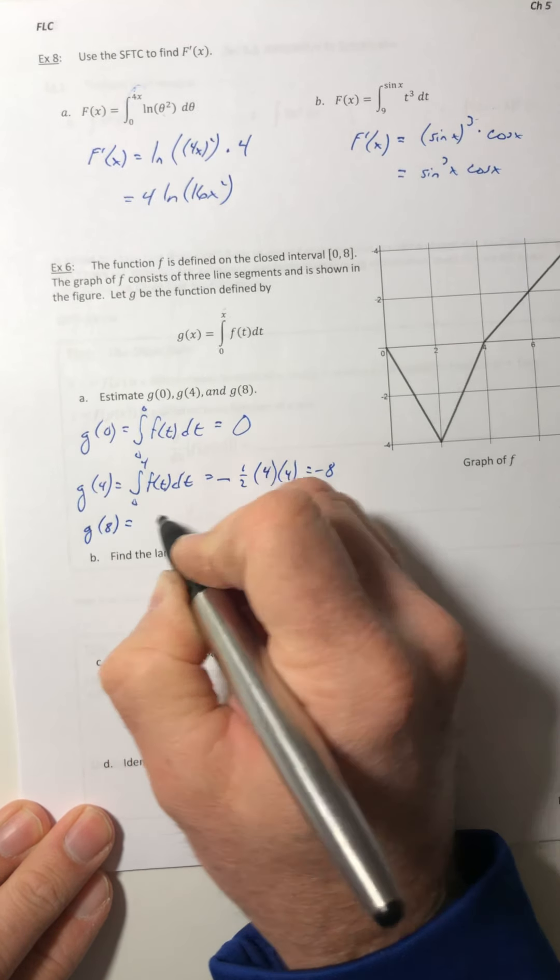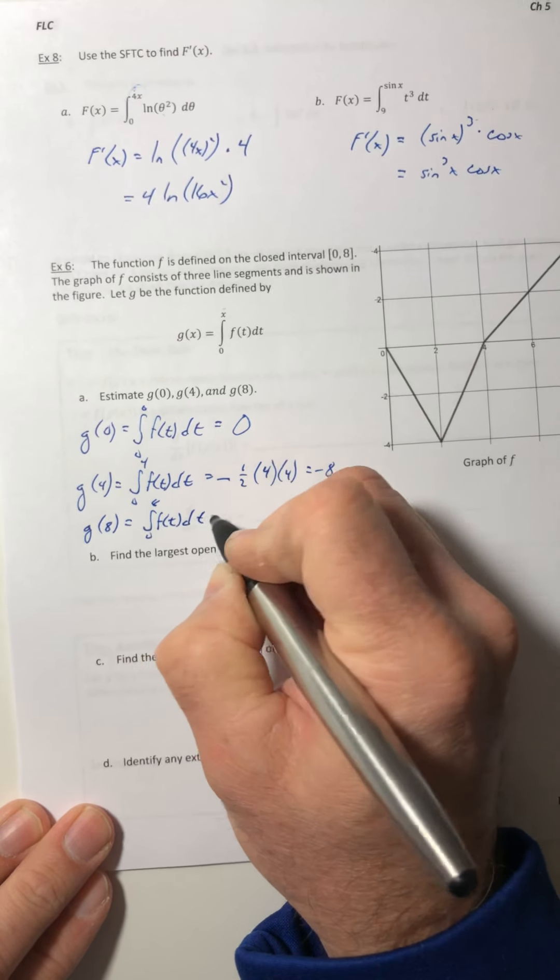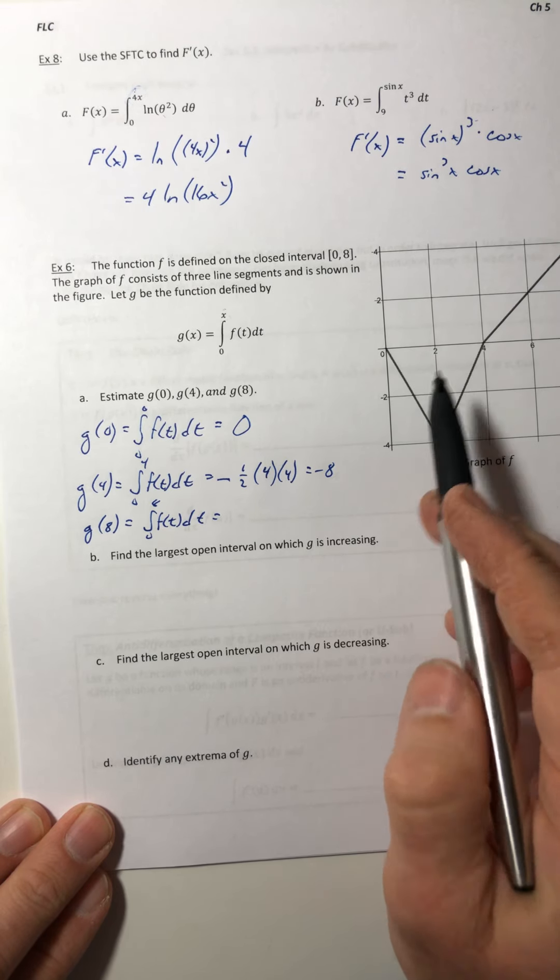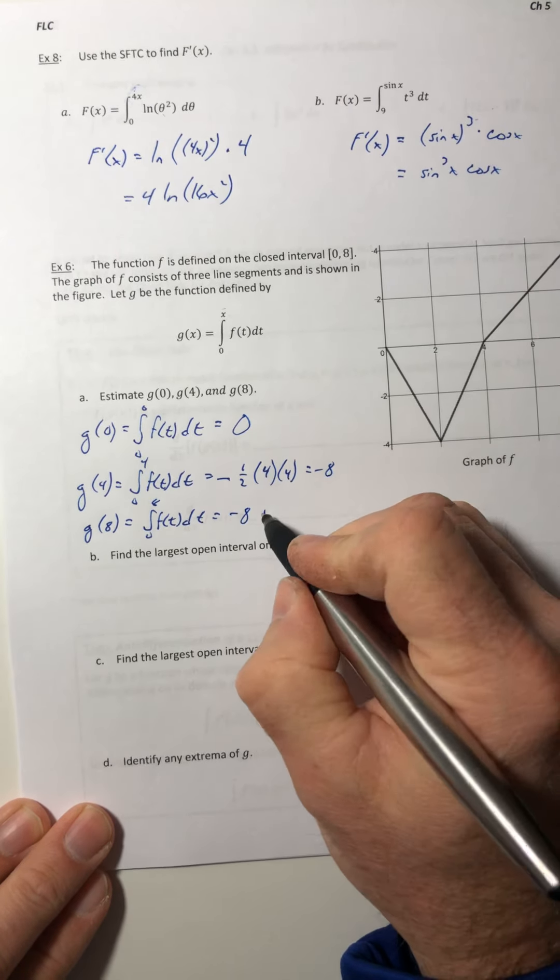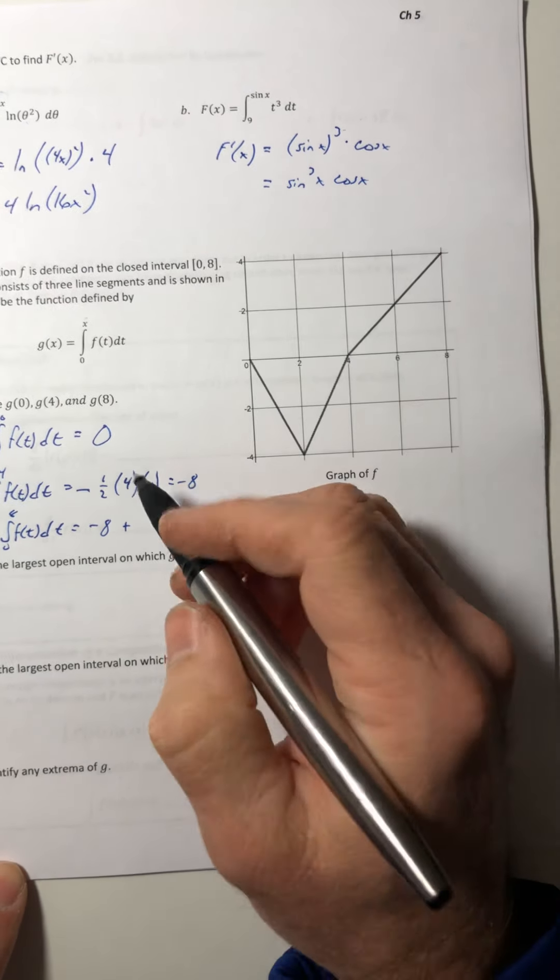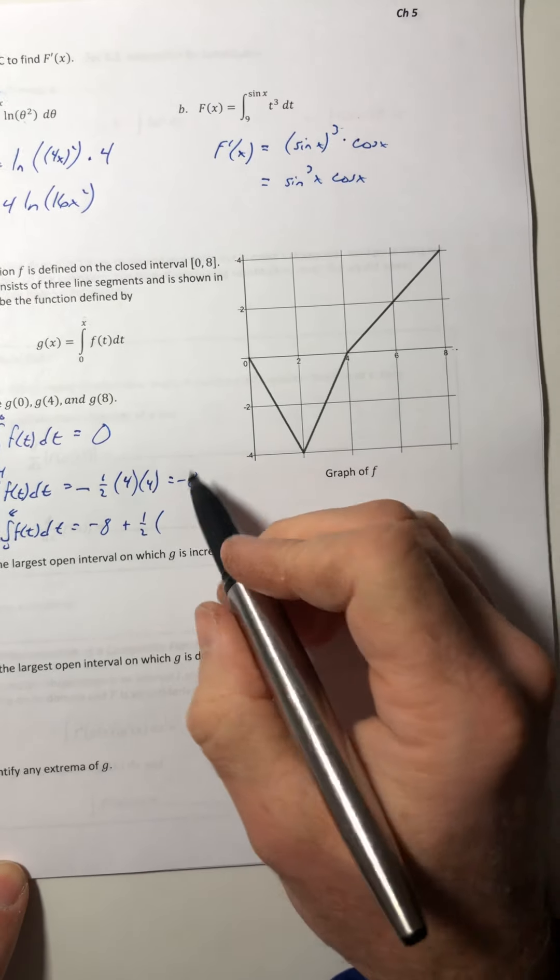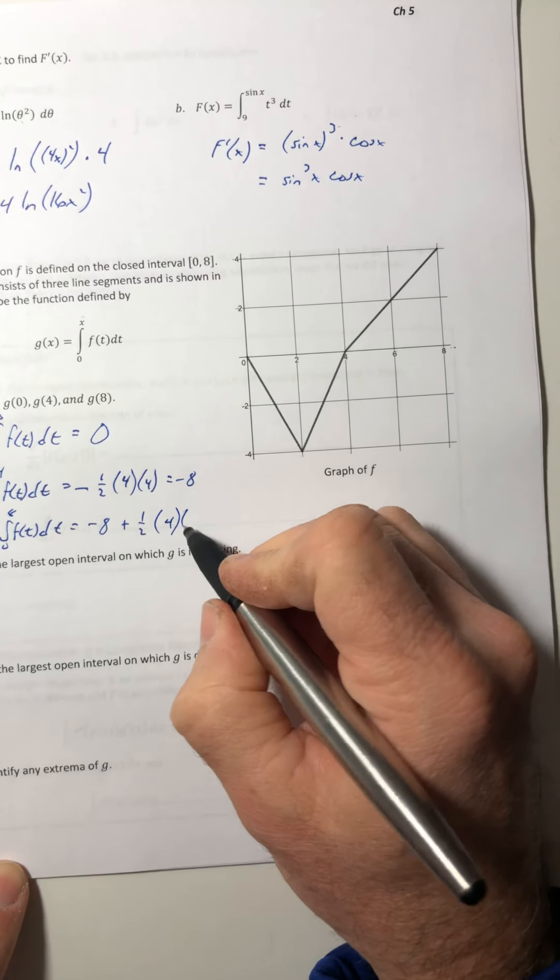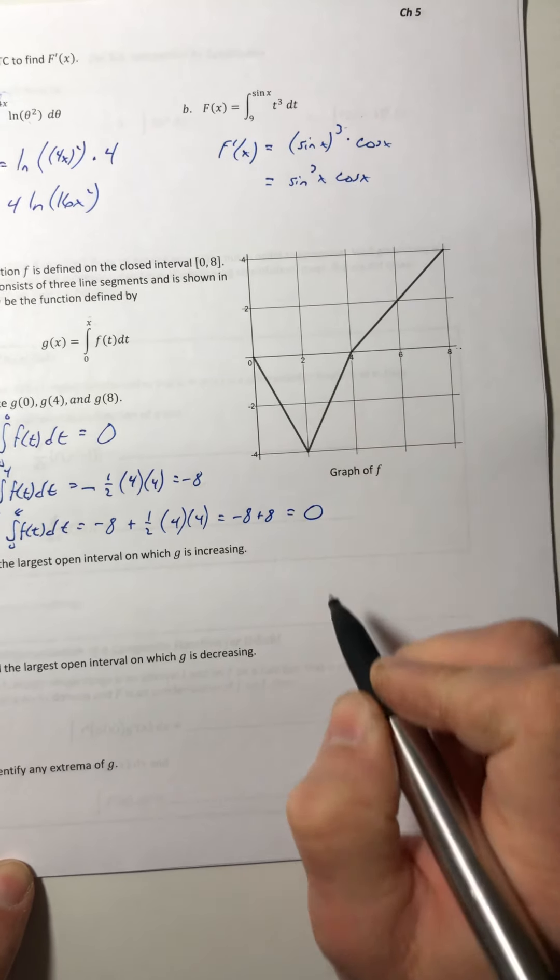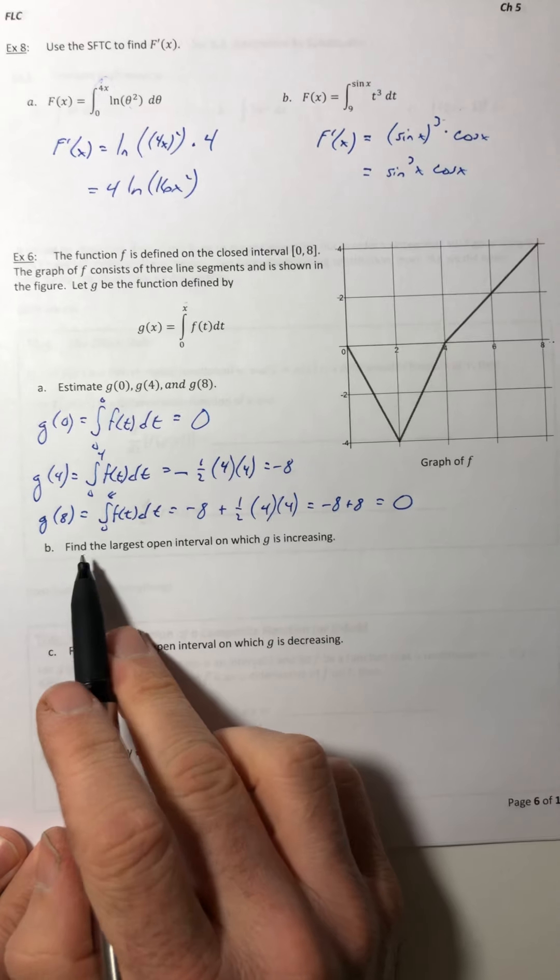So 1/2 times the base times the height, you get negative 8. Alright, g of 8. Integrate from 0 to 8 of our function. So we need to take the area of this, what we just found, so the negative 8, and then add in the area of this triangle that was above the x-axis. So base is 4, height is also 4, and negative 8 plus 8 comes out as 0. Not too bad.